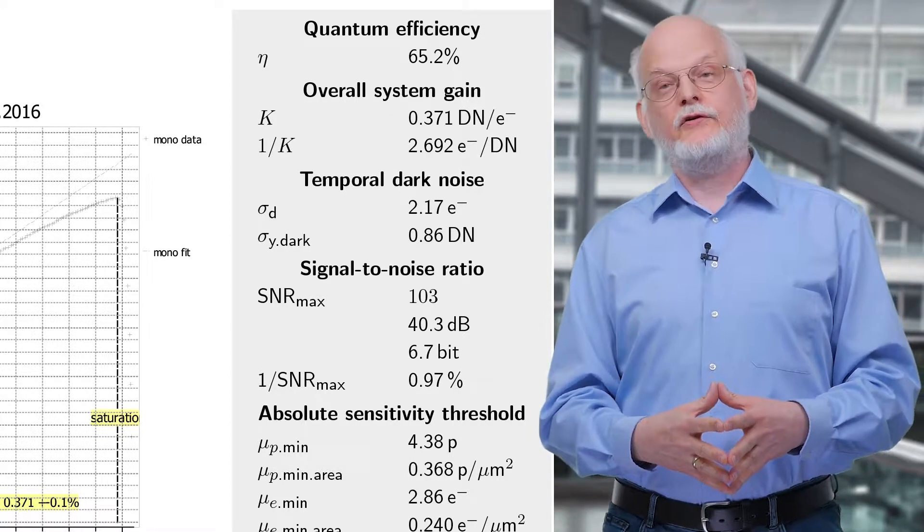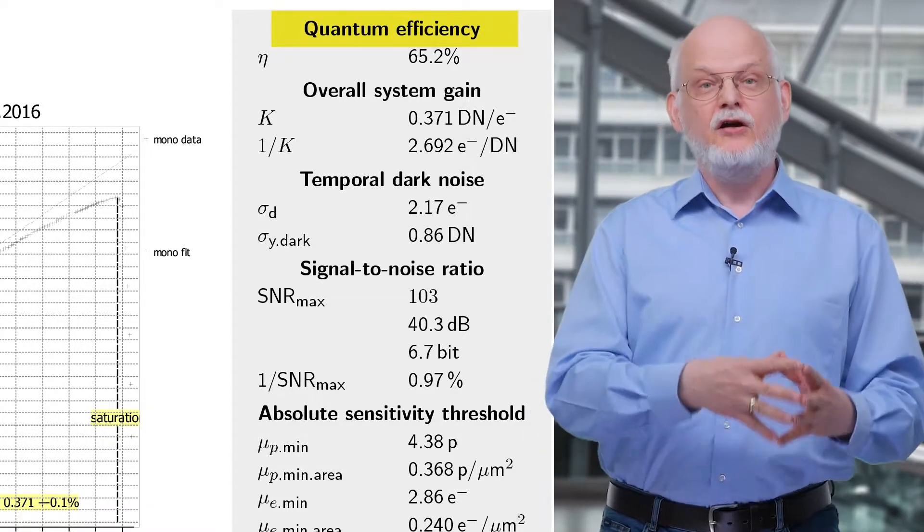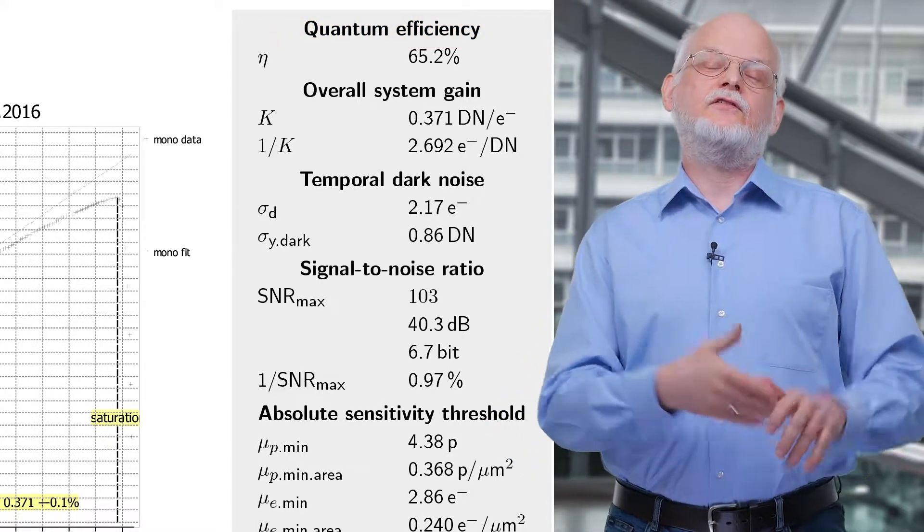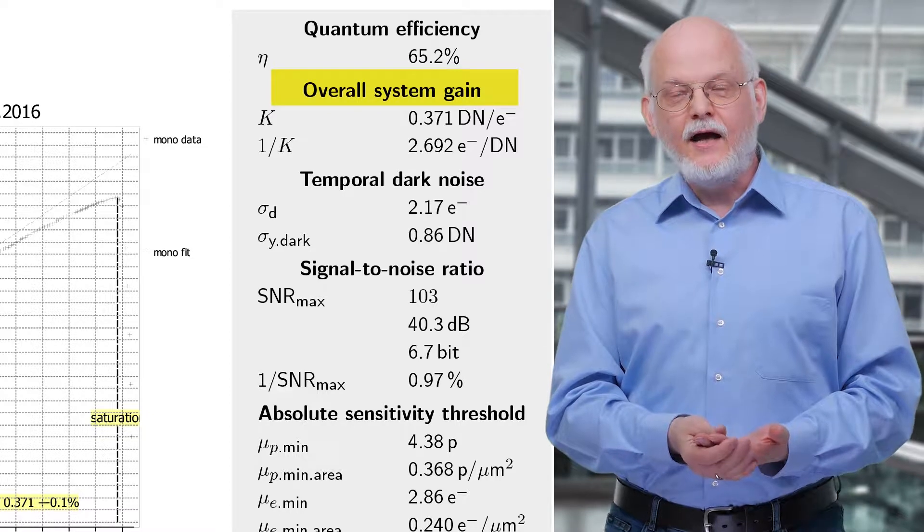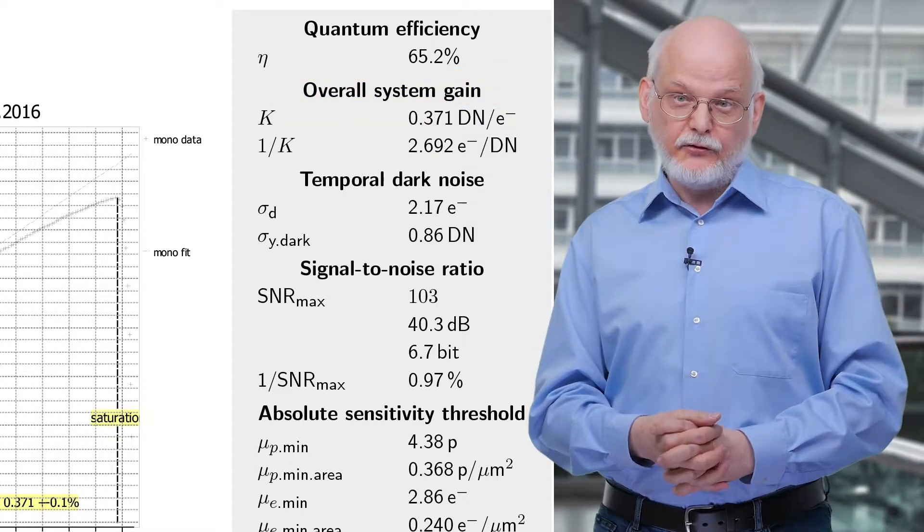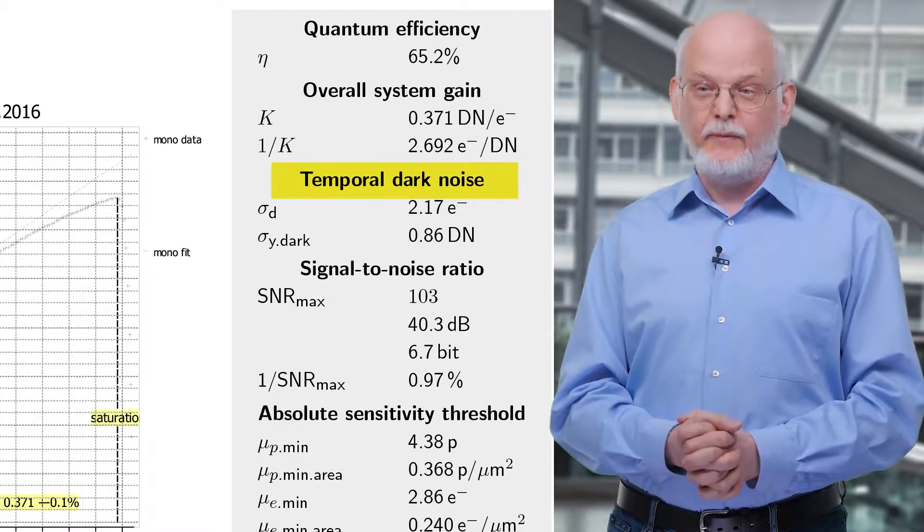This is first the quantum efficiency, that means how efficient photons are converted into charge units. Then, it is the system gain. And finally, the important other noise source, the dark noise, which is listed as a third parameter.